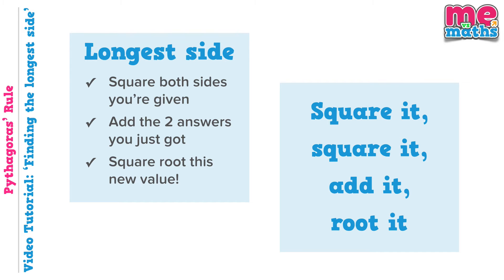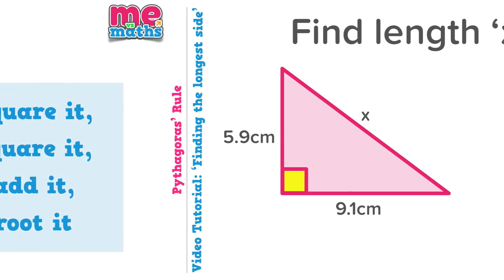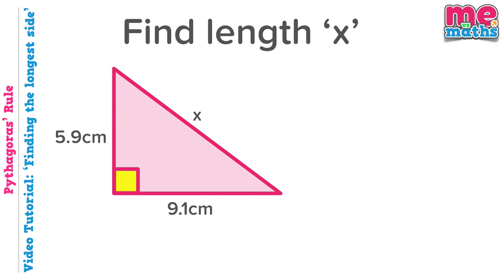Right, let's get on with the important part then: looking at some Pythagoras questions. This is our first question, and as you can see we're being asked to find side x, and the first thing we should do is check if this is the hypotenuse by looking if it's opposite the right angle. As you can see here it is. Remember, if we're looking for the longest side, then our golden rule is square it, square it, add it, root it.